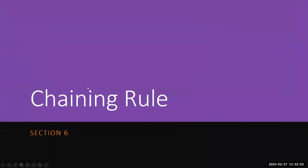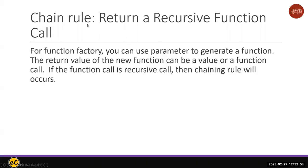Here we talk about chain rule. Chain rule is when you want to run the function and then get another function. Basically, chain rule is a factory function factory. You can use a parameter to generate a function, and that function can call another function and call another function. We call it chain rule.